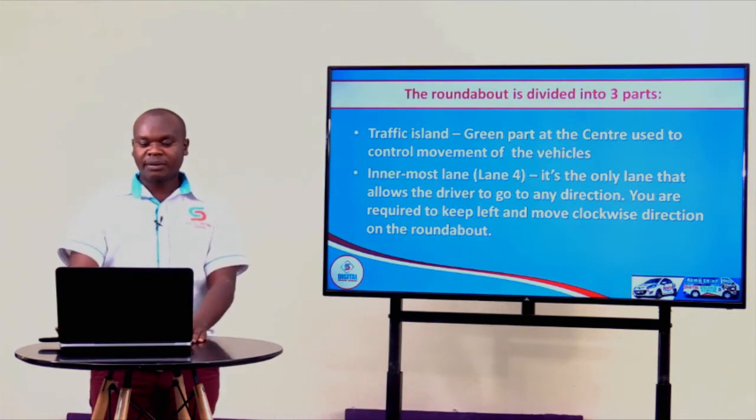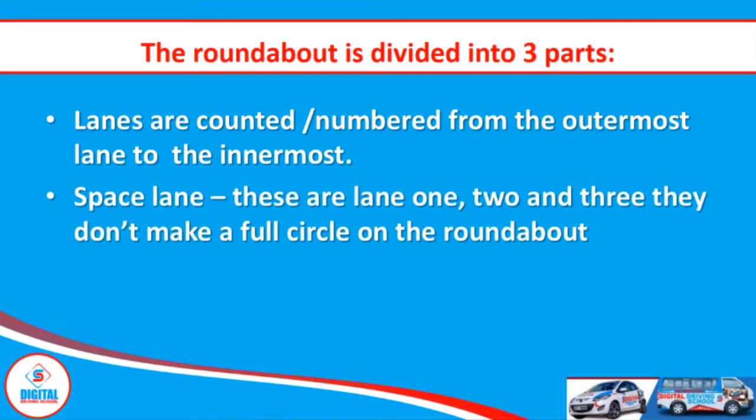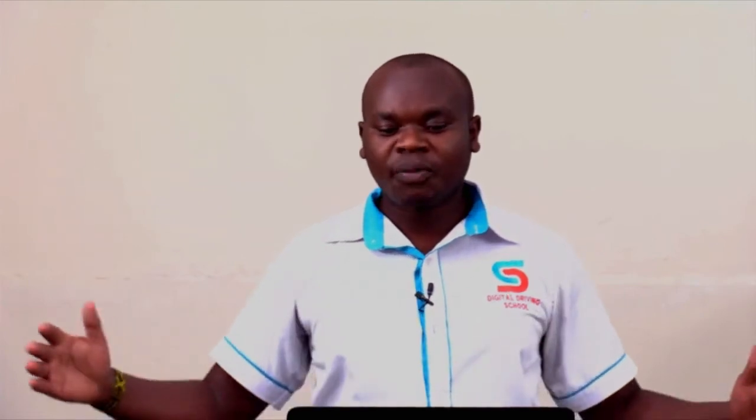The innermost lane is our second part. In our model town board we have four lanes in a roundabout. The last lane — lane number four — is the innermost lane. It is a special lane since it is the only lane that can take you into all the directions. Then we have the space lanes, our third part, which are lanes number one, two, and three. Lanes are counted from the outermost to the innermost, so the outermost is lane one, then two, three, and the innermost is lane four.